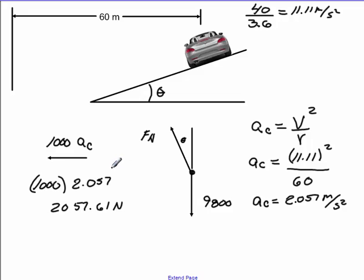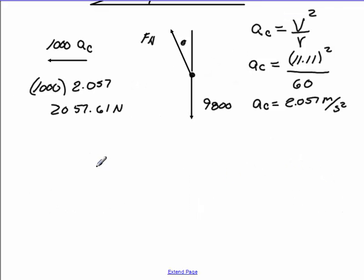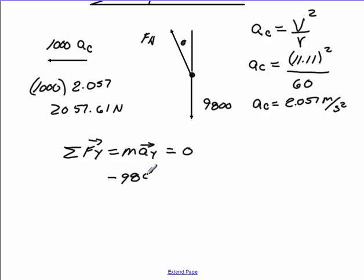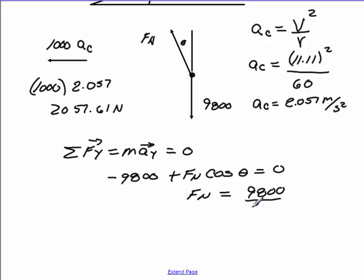That's the force required to have a car of mass 1,000 kilograms go around a corner with a radius of 60 meters at a velocity of 11.11 m/s. Now let's sum our forces in the y-direction and set it equal to mass times acceleration in y. Since the object is not going to accelerate off the track, we set that equal to zero: minus 9,800 plus F normal times cosine of theta equals zero. Solving for normal force gives F normal equals 9,800 divided by cosine of theta.